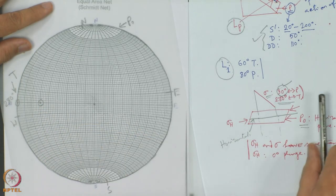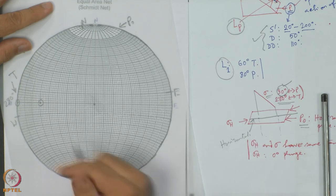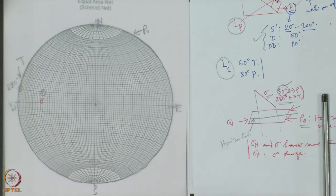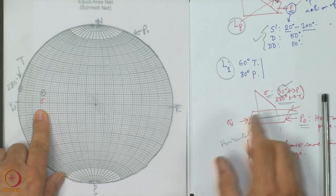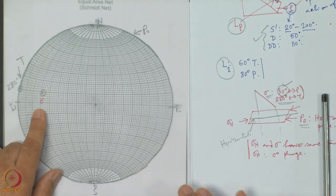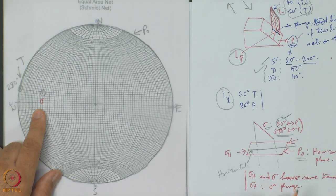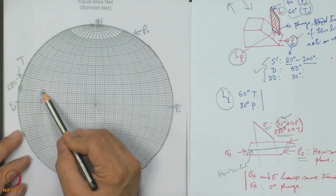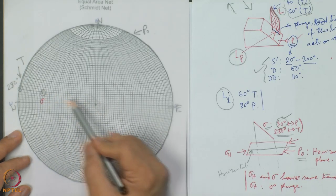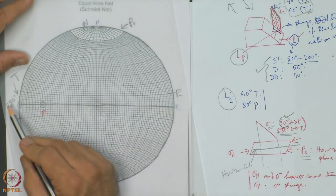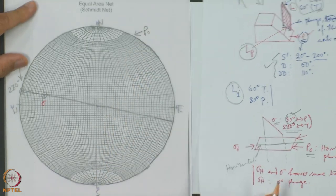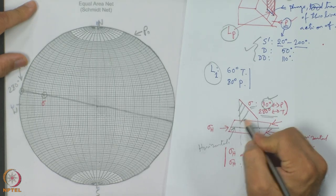This point represents the sigma stress. I come back matched with the north — this is sigma. Even if I do not call it stress and simply say a line, no change will happen. Next, in our previous example, I drew a vertical plane passing through the line. Here also I have to draw a vertical plane passing through the line, meaning I join this point and the centre and draw a straight line. This straight line means a vertical plane.